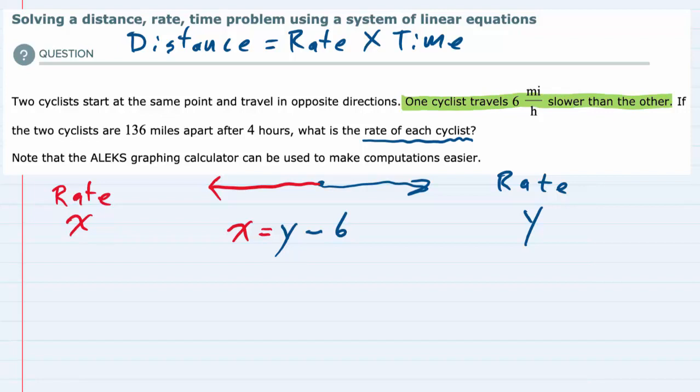And then the second part states that the two cyclists are 136 miles apart after 4 hours. So if my figure here is 4 hours later, this distance is 136 miles.